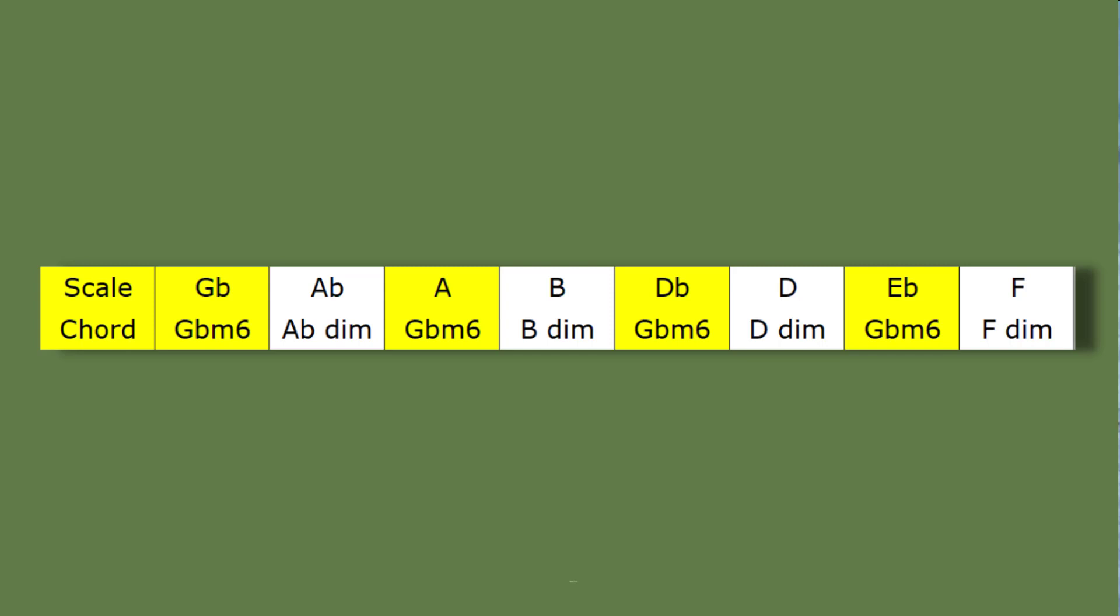So essentially on each of the chord notes in the scale, that's G flat, A, D flat and E flat, we're going to play an inversion of the G flat minor 6th chord. On all the other notes, the non chord notes, we're going to play a diminished 7th chord. Here we go.